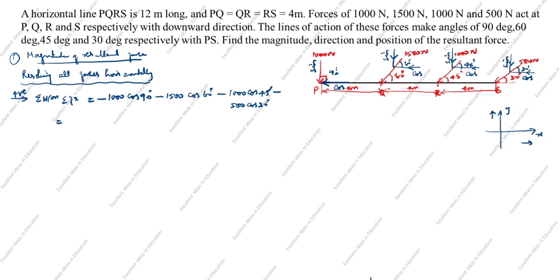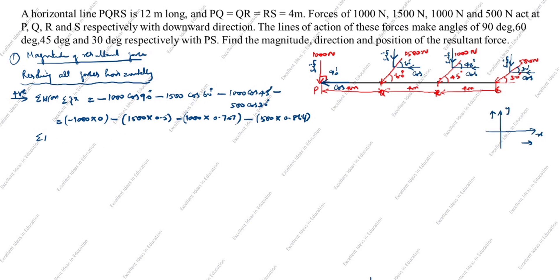Calculating: −1000·cos90° = 0; −1500·cos60° = −1500 × 0.5 = −750; −1000·cos45° = −1000 × 0.707 = −707; −500·cos30° = −500 × 0.866 = −433. Therefore, ΣH = −1890 N.